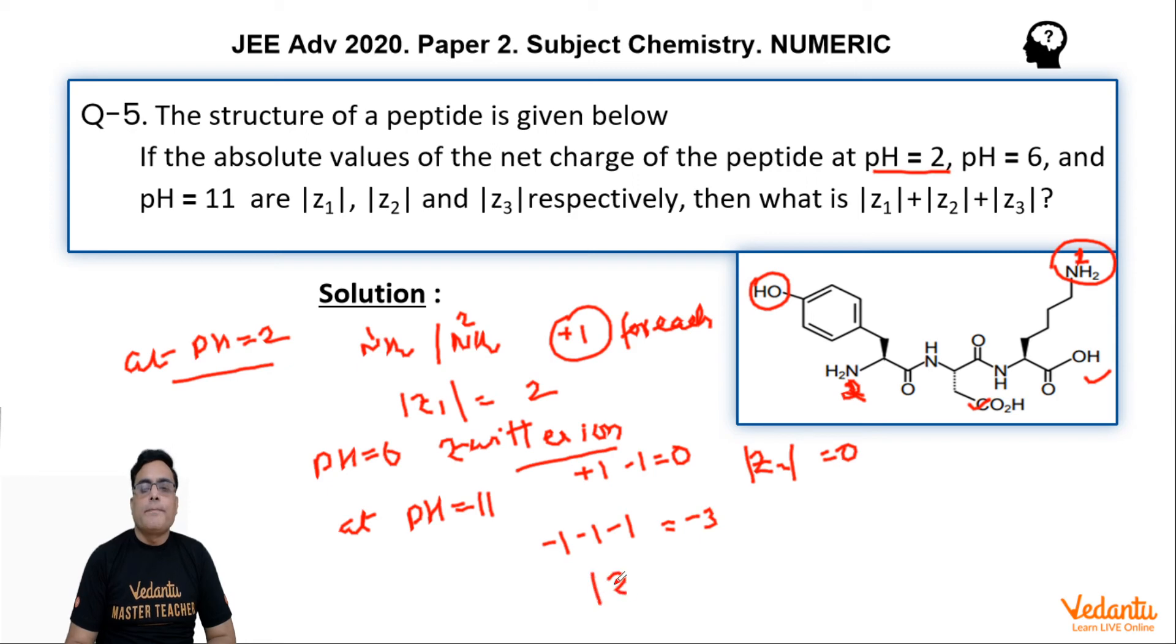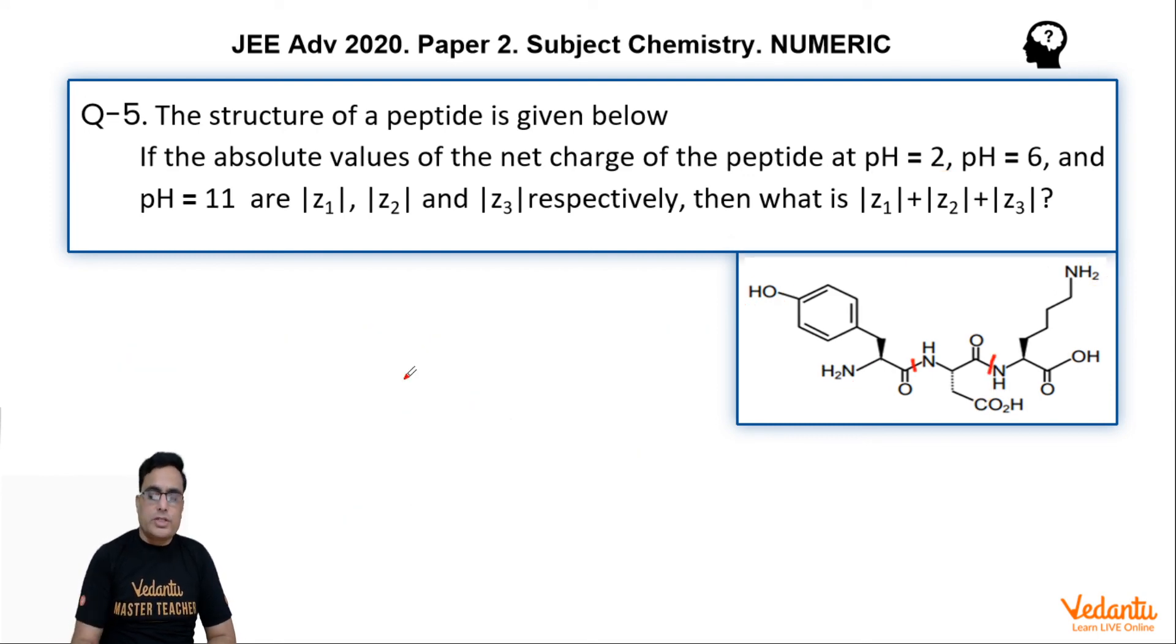Now tell me the answer. Mod z1 plus mod z2 plus mod z3 is equal to 2 plus 0 plus 3, which comes out to be 5. That means the answer for this question is 5. Understood? Very simple question it is.